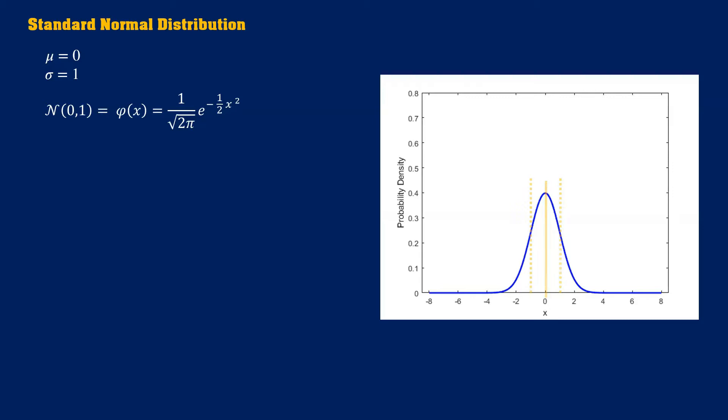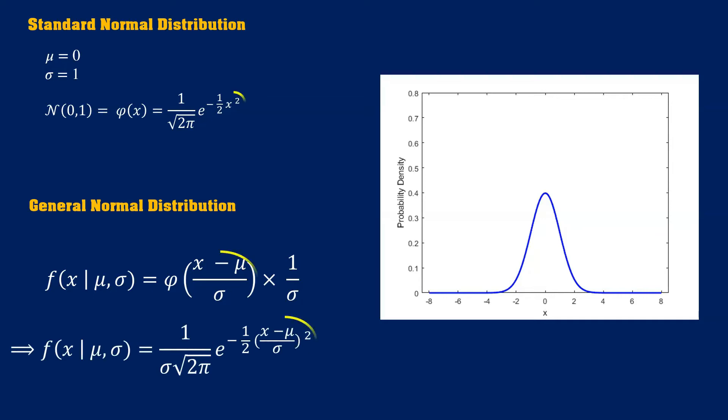But there is a general formula of normal distribution which is a transform of a standard normal distribution. If we move the variable x in the direction of mu and divide it by sigma and then divide the whole formula by sigma, we reach a general form of normal distribution. Pay close attention to transformation of the curve.